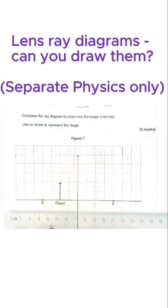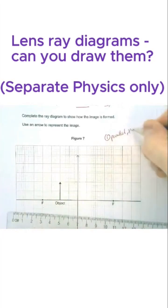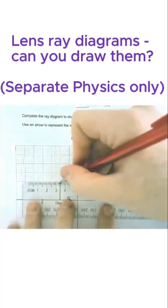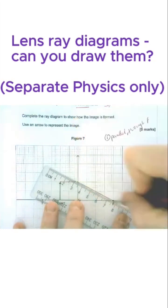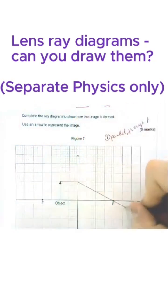Ray one goes parallel to the axis then through F like so. Ray number two goes straight through from the top of the object through the middle of the lens and keeps on going. So let's draw ray two...